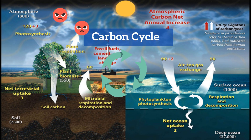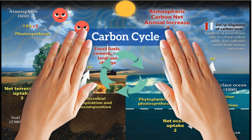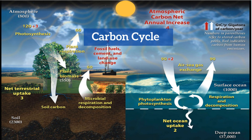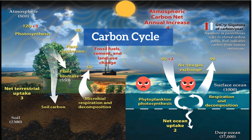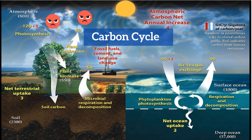Carbon recycles among five major locations or influences. These items include the atmosphere, the terrestrial biosphere, the earth's interior, the ocean, and human influence. Let's take a look at what happens at each of these influences.